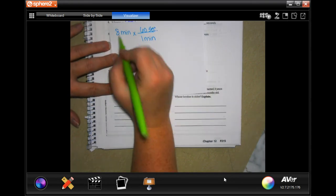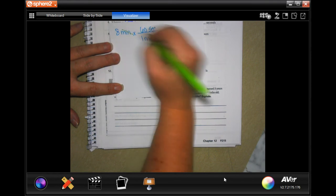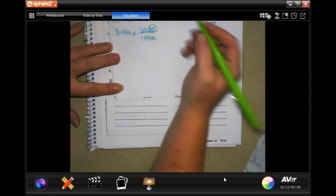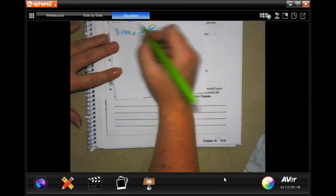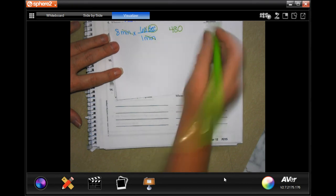So eight minutes to turn into seconds, in one minute there's 60 seconds. Cross cancel our minutes, we wind up in seconds, that's good. Six times eight is 48, and I have a zero to add on, so 480.